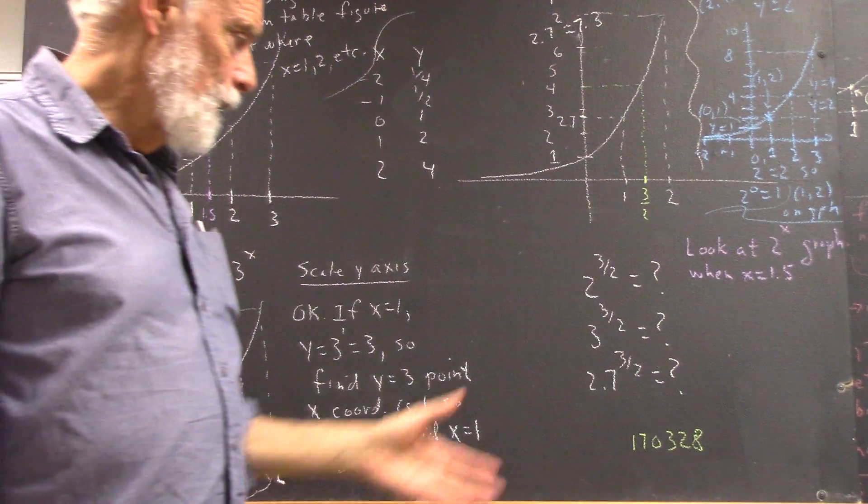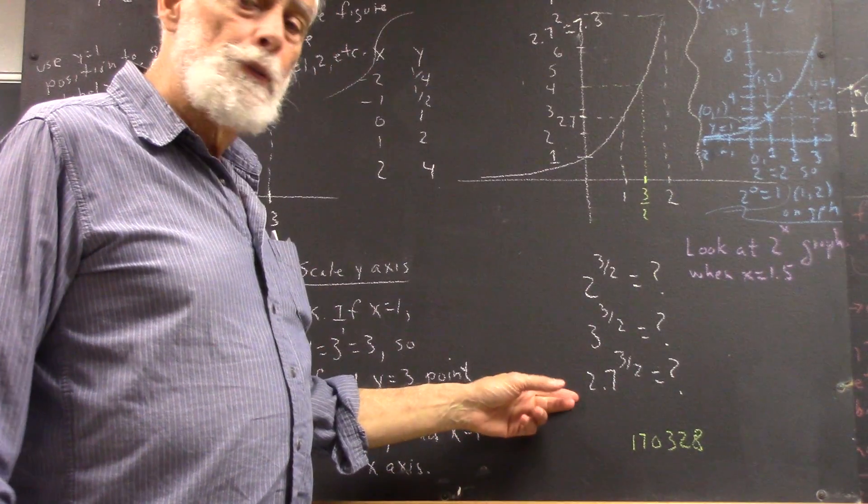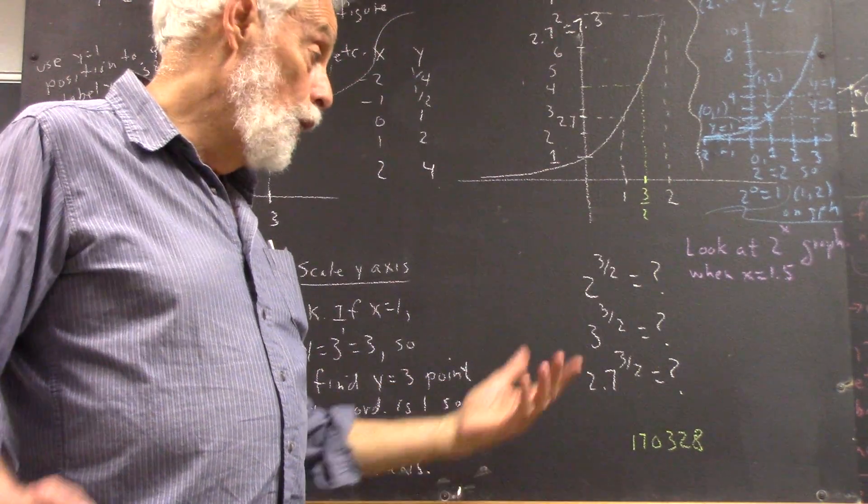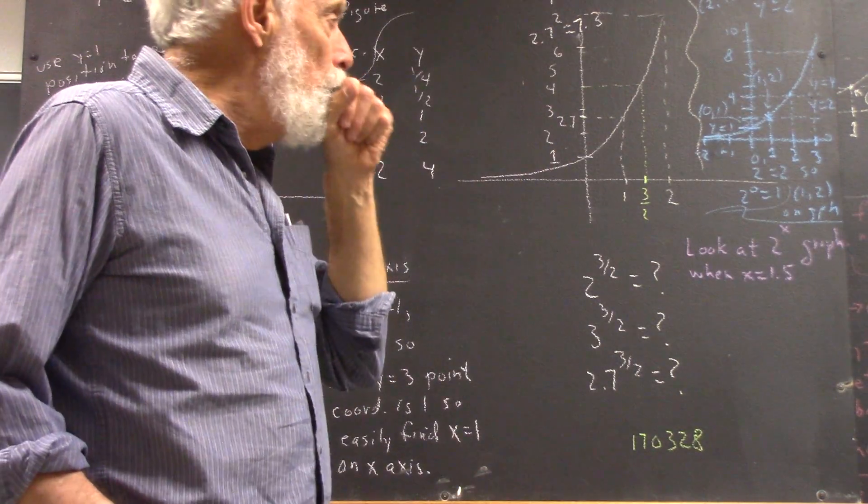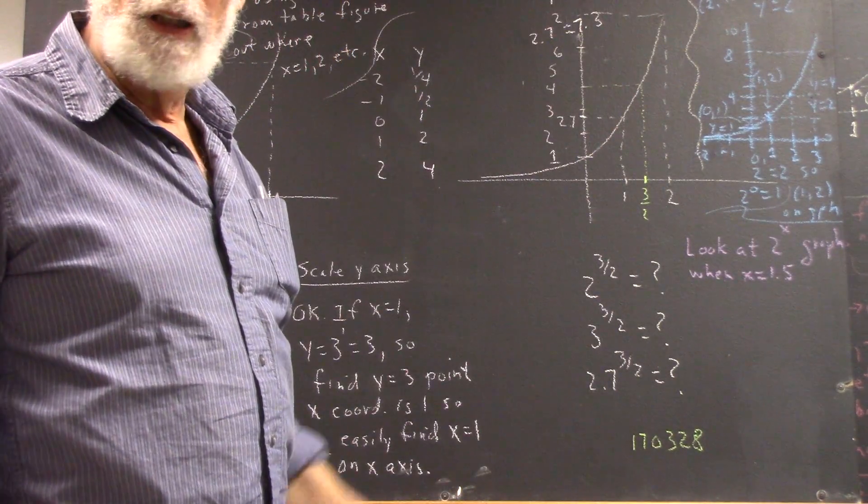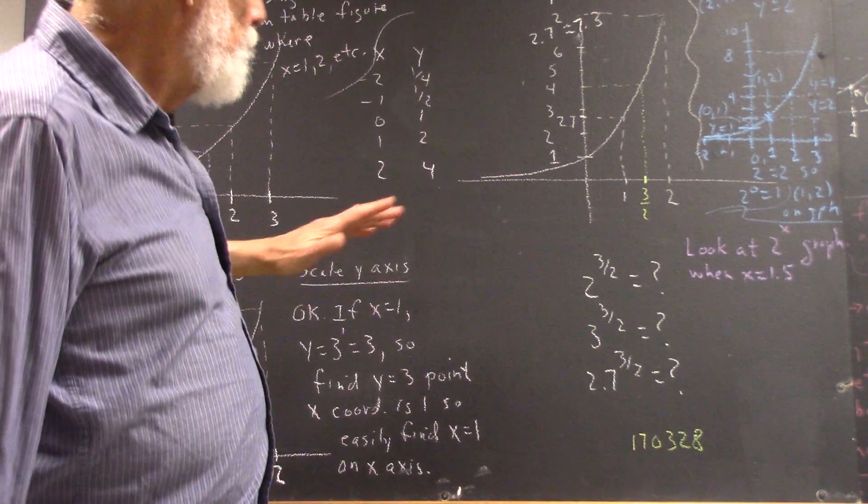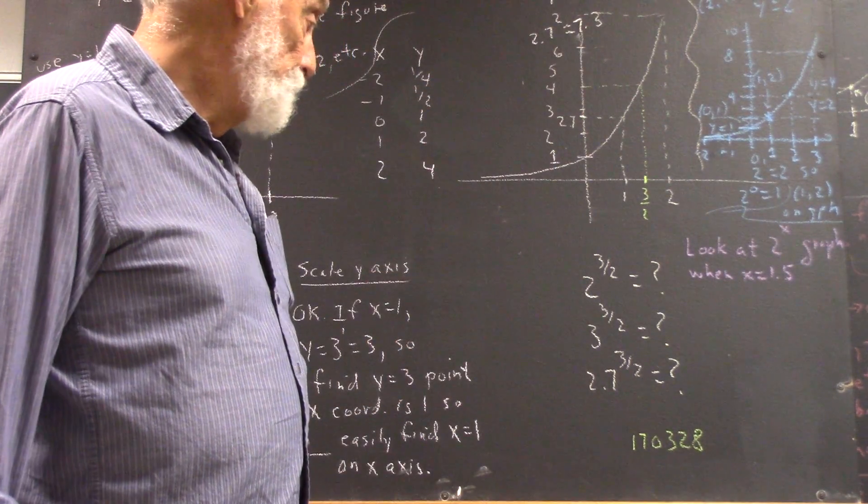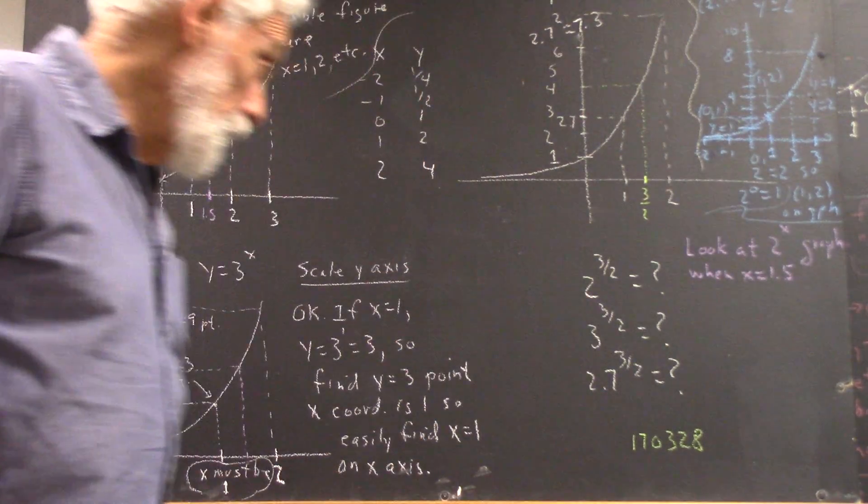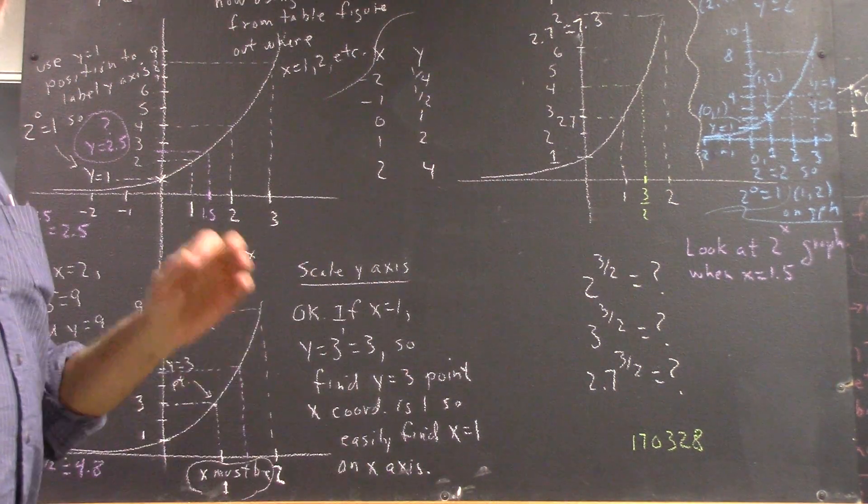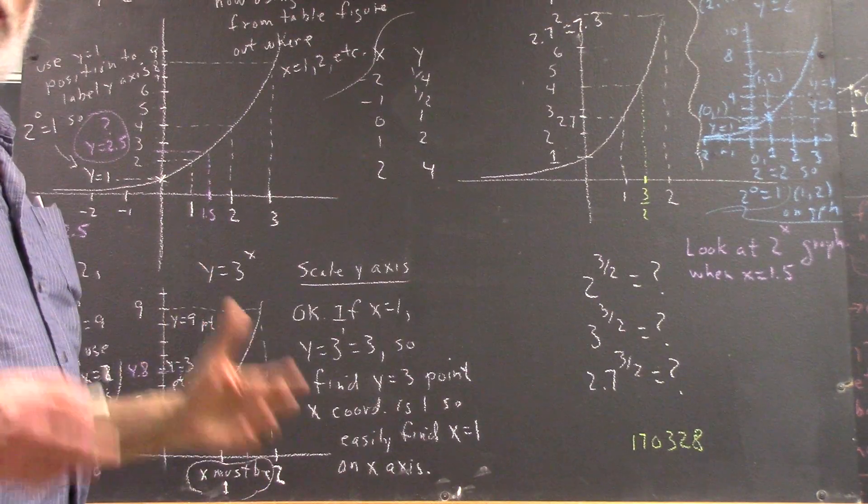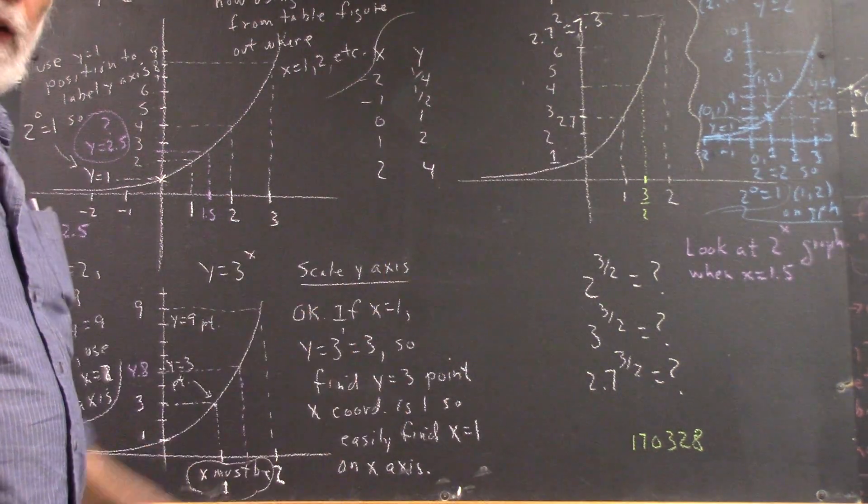So it looks like my estimate came out low again. I don't know why they're all coming out low. Something to do with the way I drew the curve. But in any case, you make your own estimates before you go to the calculator and see what the accurate values are. Good reinforcement and a good exercise in understanding these graphs.